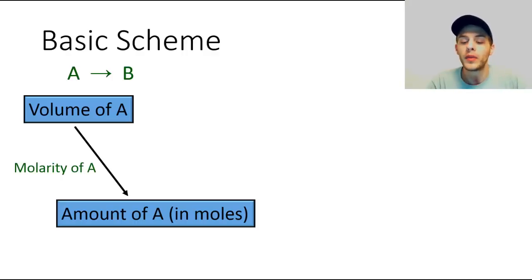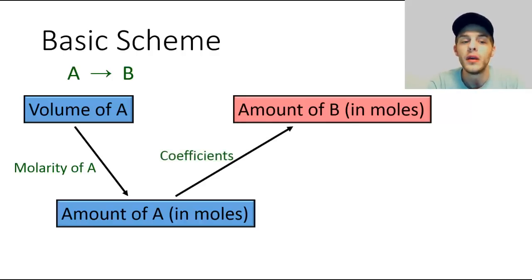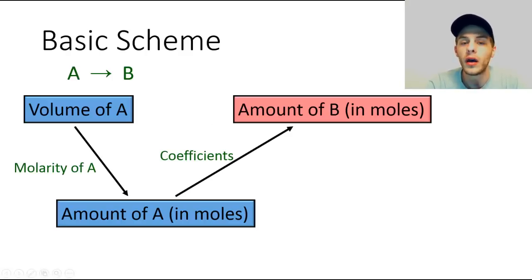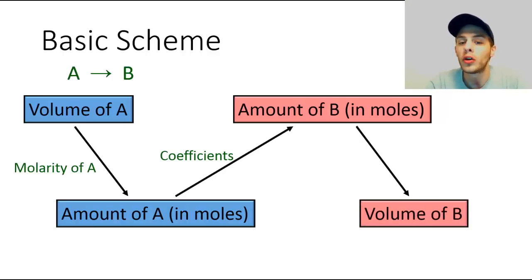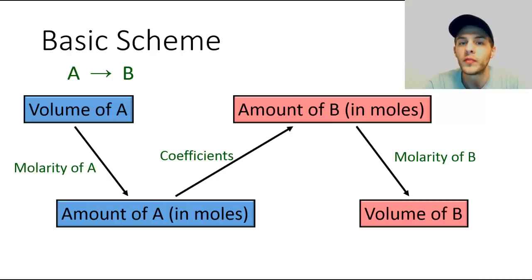Now that we have the amount of A in moles, we can convert that to the amount of B in moles using the coefficients from the balanced chemical equation. Notice that the coefficients in front of A and B are both an understood one, so this step would be very easy for this particular example — but it's not always going to be that easy, so this conversion step is definitely necessary. Then, with the amount of B in moles, we can convert that into the volume of B using the molarity of B. So it's a three-step conversion process requiring three conversion factors — two of them are molarity, and the one in the middle uses coefficients from the balanced chemical equation.